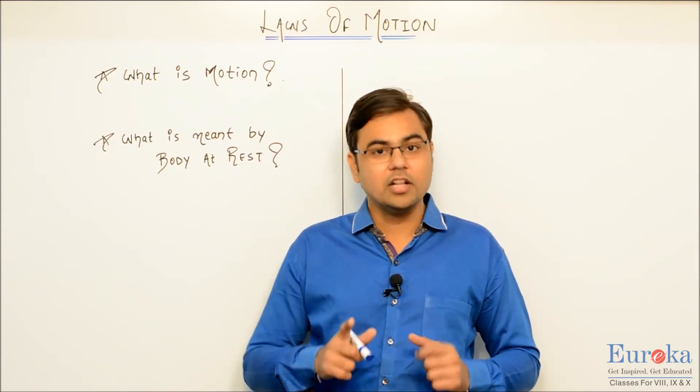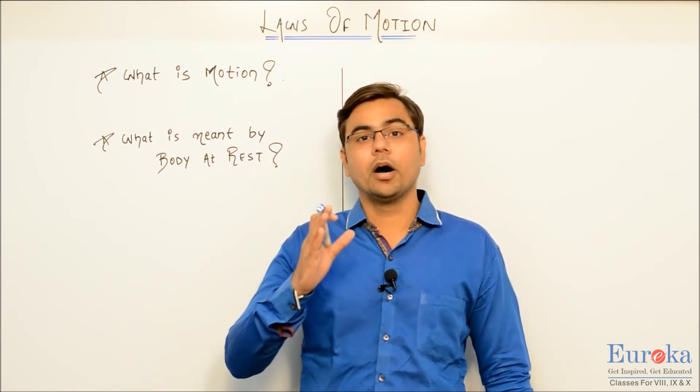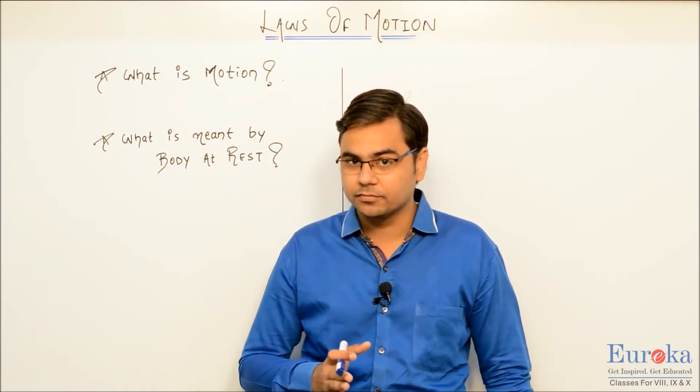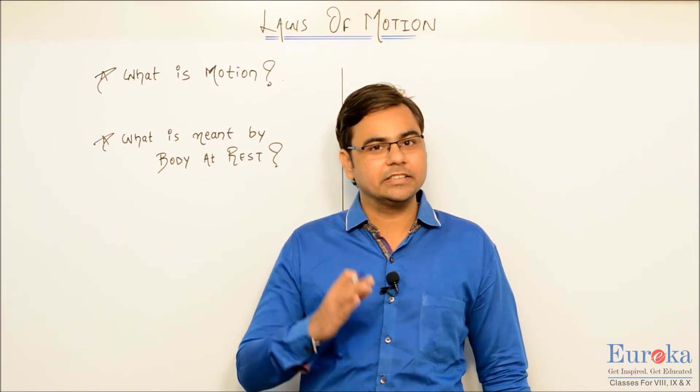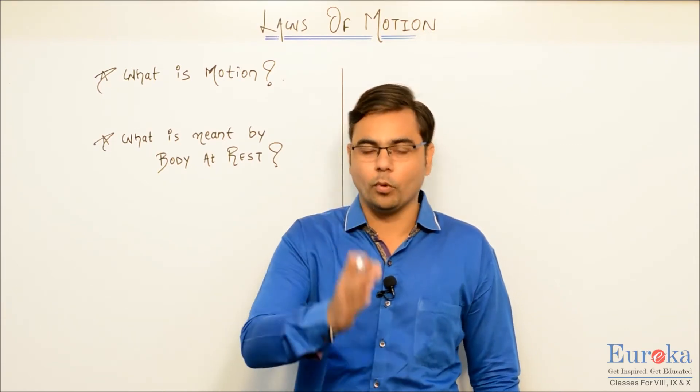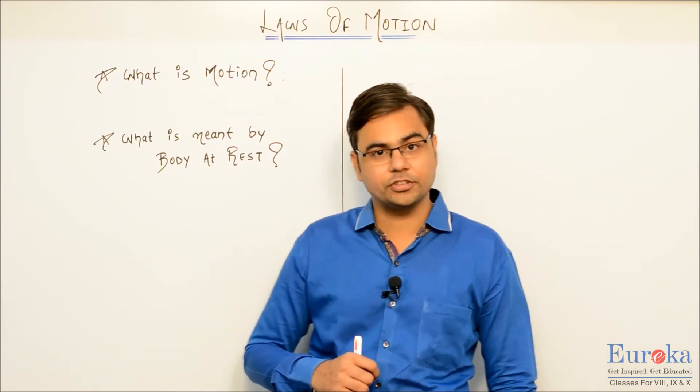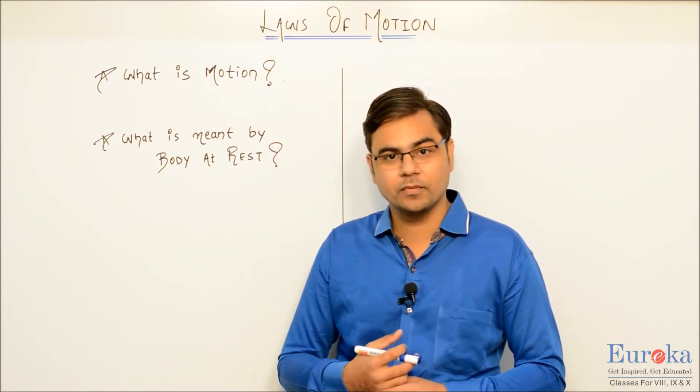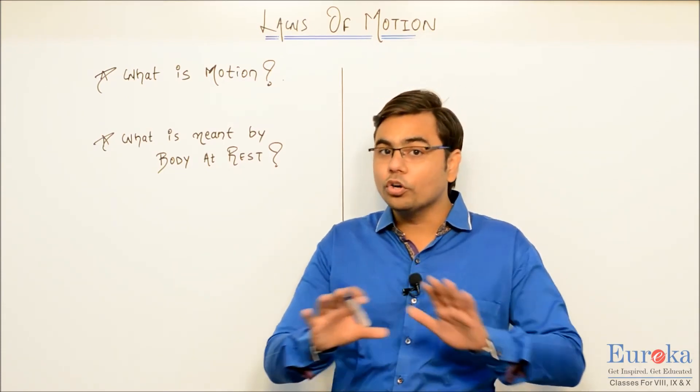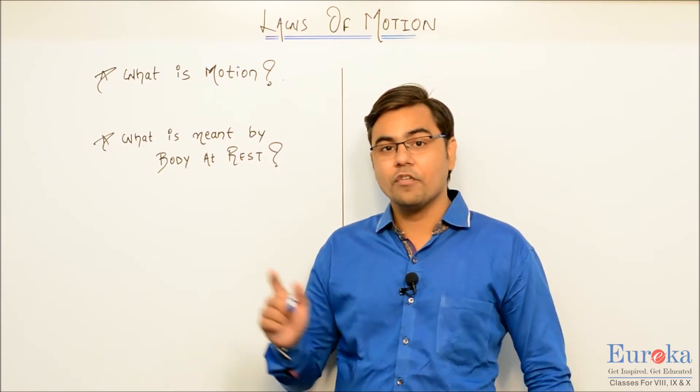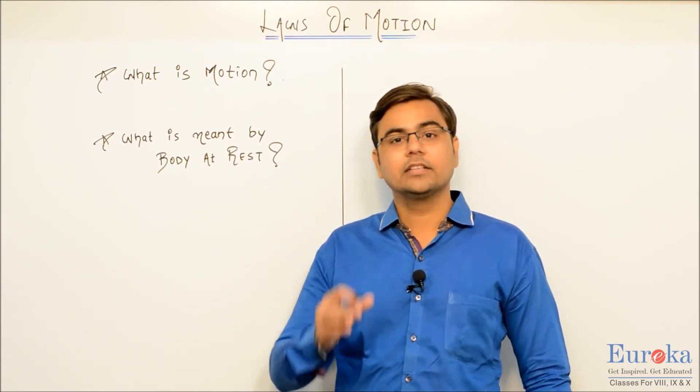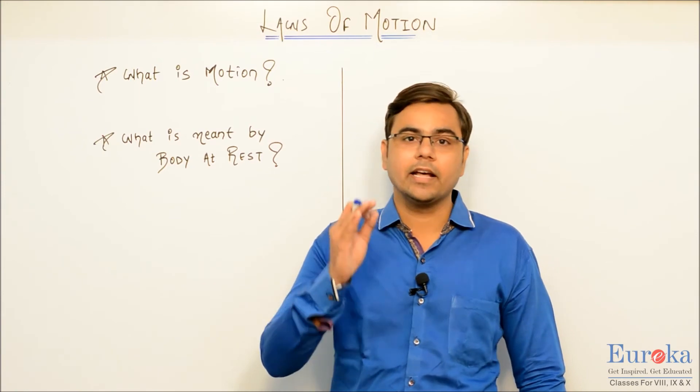So I repeat the definition of motion. We say that the change in the position of an object with respect to its immediate surroundings is what we call as motion. So can you tell me how do we define body at rest or what is meant by body at rest? So we say that if there is no change in the position of an object with respect to the immediate surrounding, the body is said to be at rest.